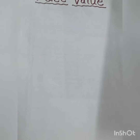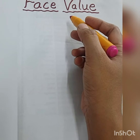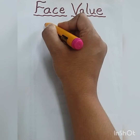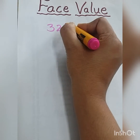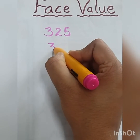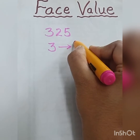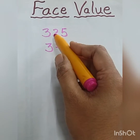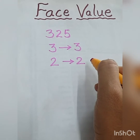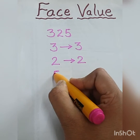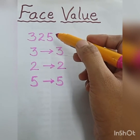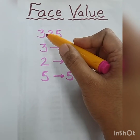Now we will discuss about the face value. When we say face value, it is the number itself — face value means the number itself. Suppose I am writing number 325 and I want to write the face value of each digit. I will start with number 3 — the face value is the number itself, so it is 3. For number 2, again the number itself is the face value, so I will write 2 as it is. And for number 5, the face value will be 5. So when we say face value, we write the number itself.